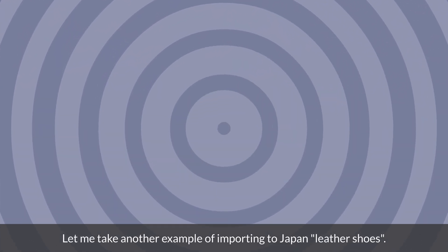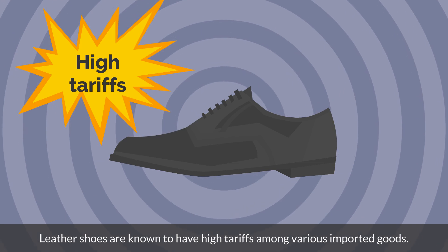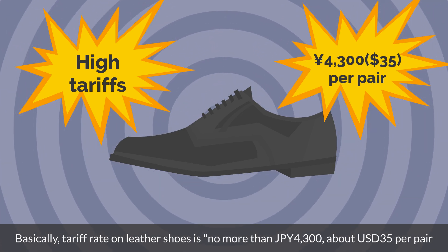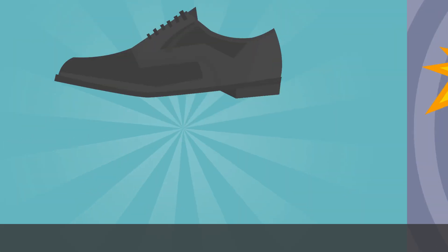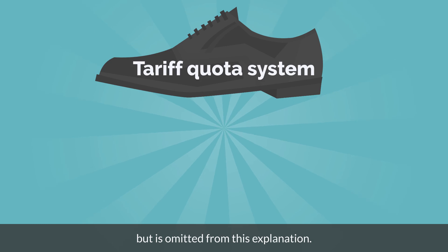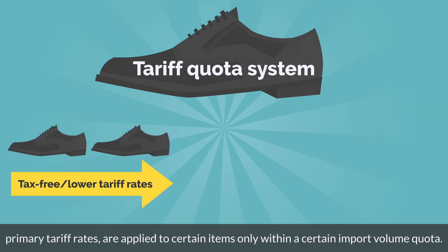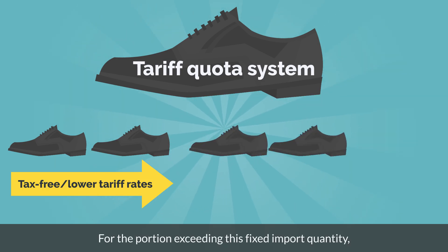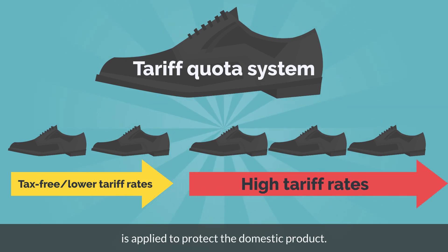Let me take another example of importing leather shoes to Japan. Leather shoes are known to have high tariffs among various imported goods. Basically, the tariff rate on leather shoes is no more than 4,300 Japanese yen (about 35 US dollars) per pair, or 30% of the product price, whichever is higher. The importation of leather shoes is a commodity subject to the tariff quota system, but this is omitted from the explanation. The tariff quota system applies tax-free or lower primary tariff rates only within a certain import volume quota; for the portion exceeding this quantity, a higher secondary tariff rate is applied to protect the domestic product.